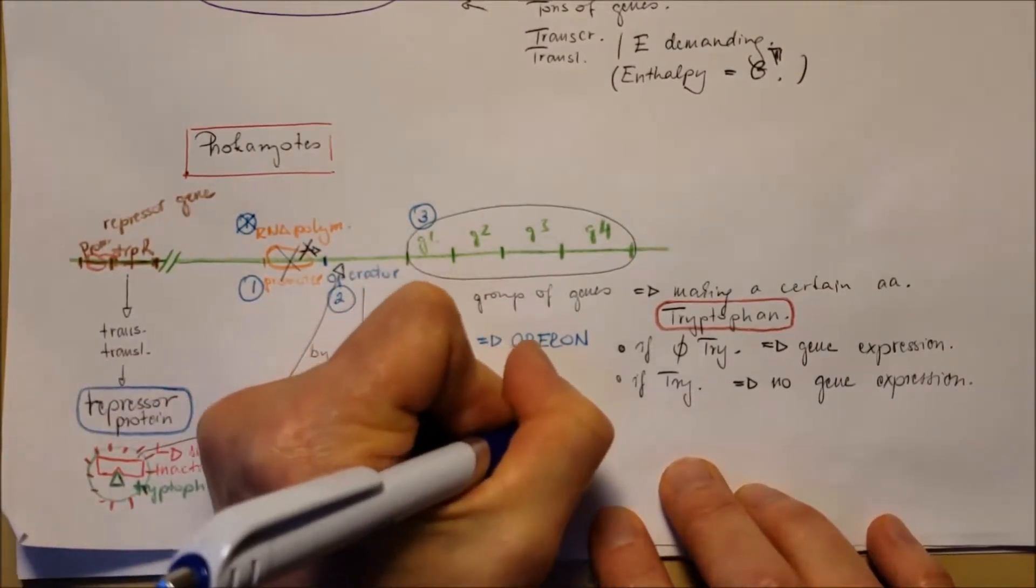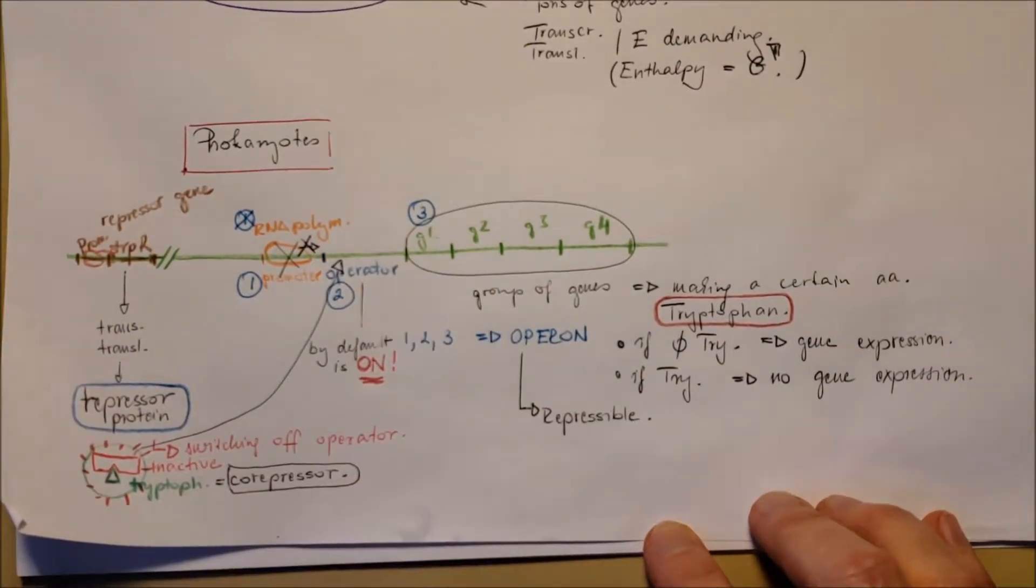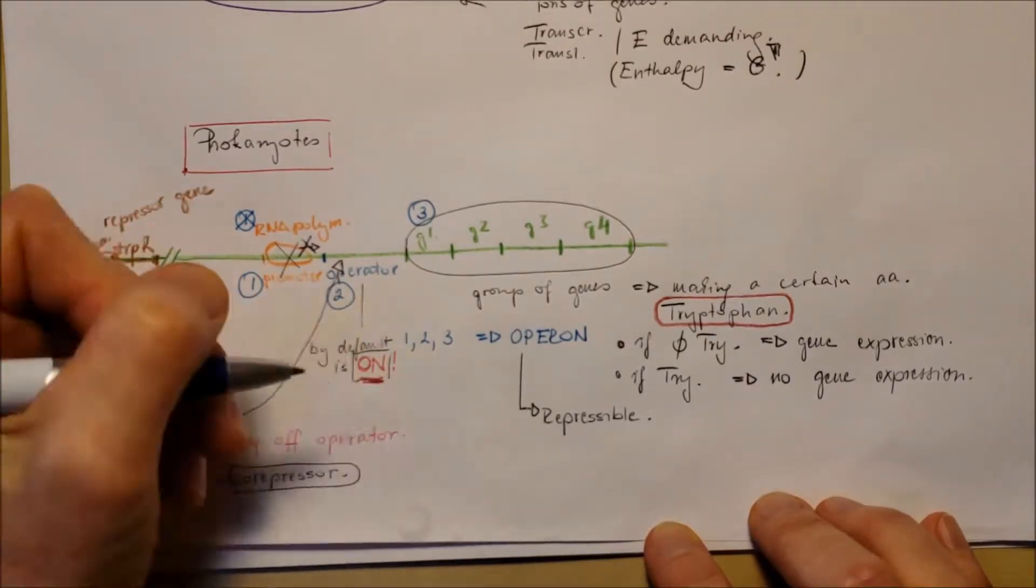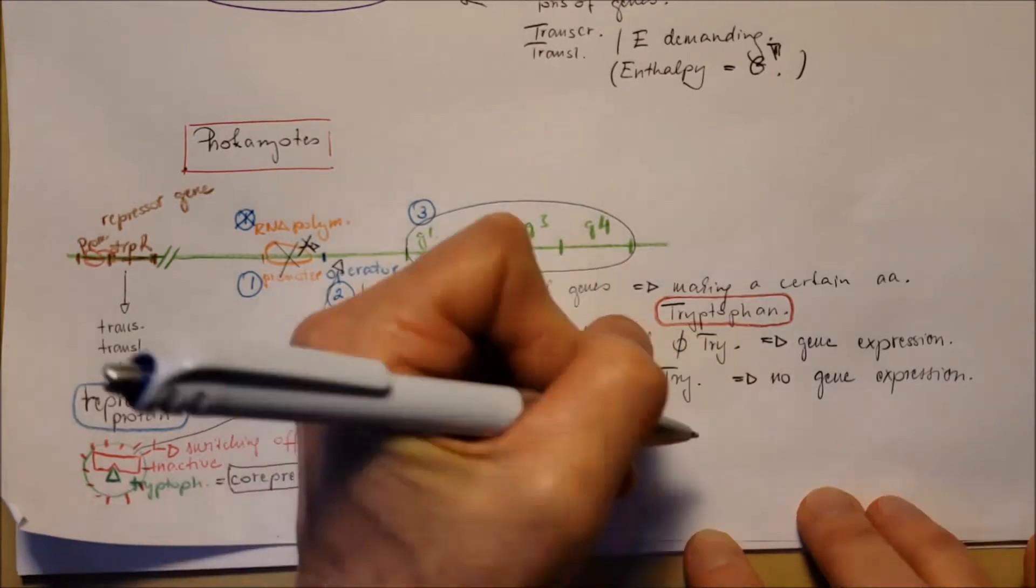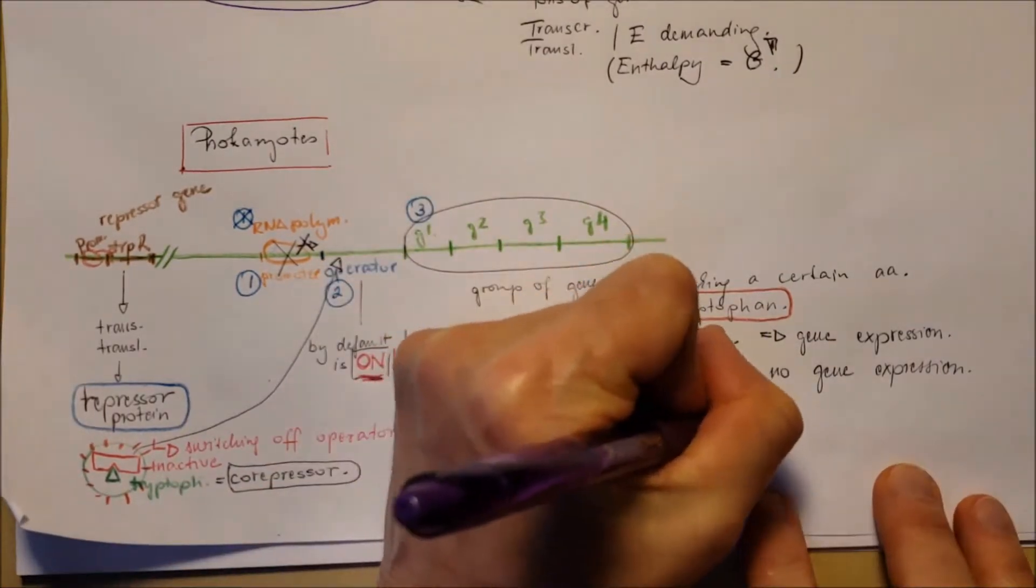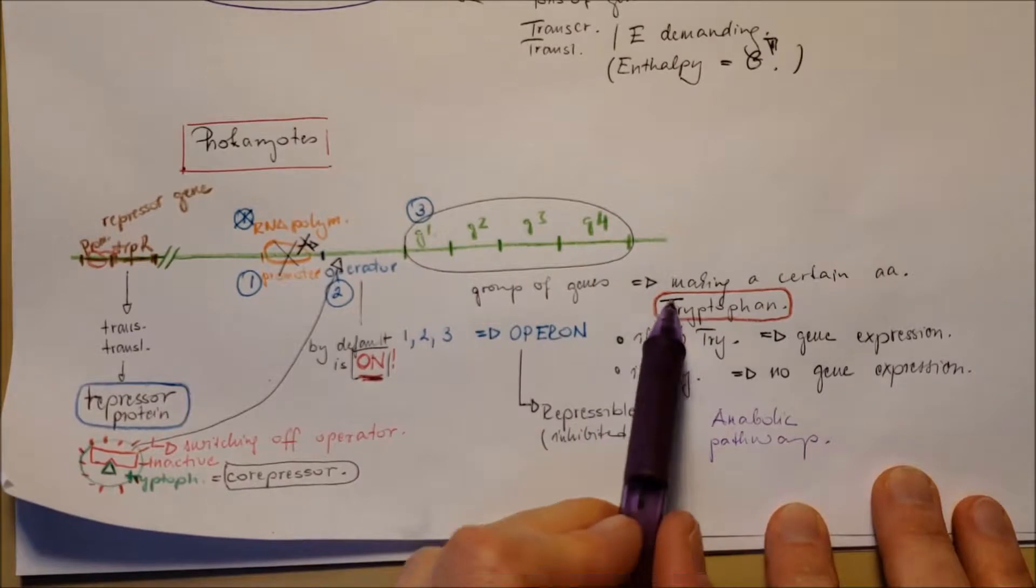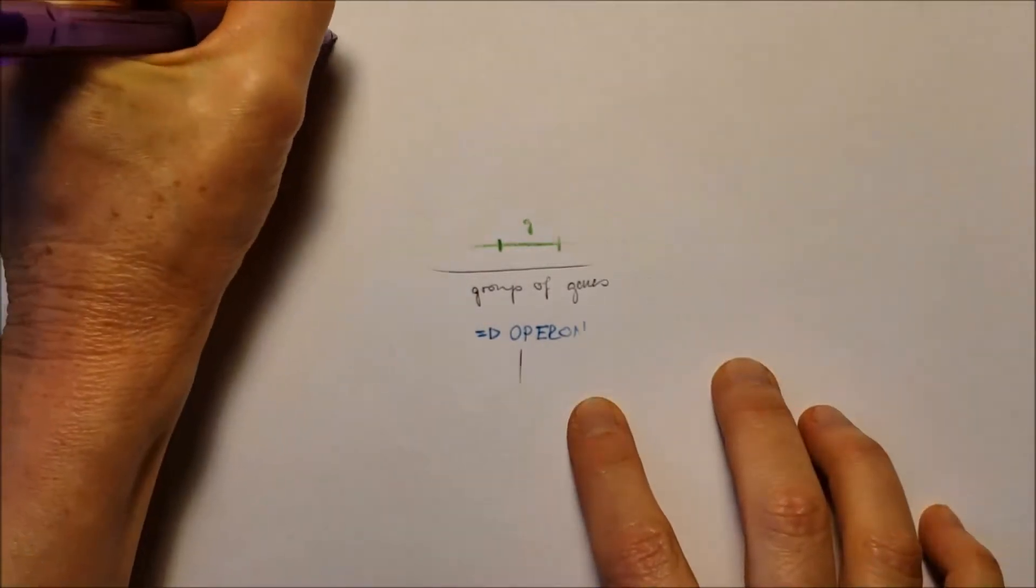The operon, in this case, it's repressible, it can be inhibited, but it's usually on by default. And this happens usually at anabolic pathways, like in the tryptophan case.